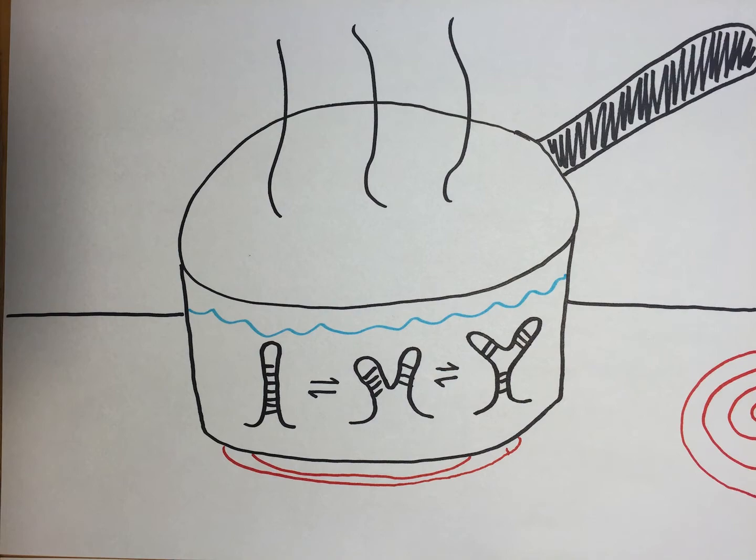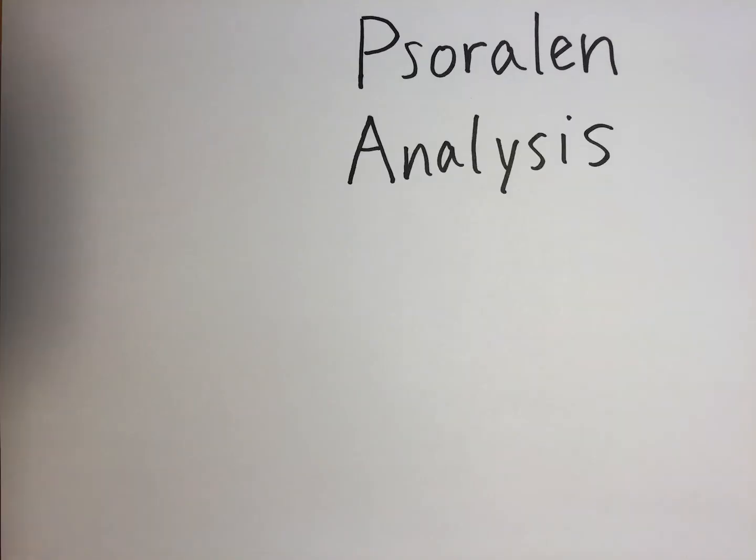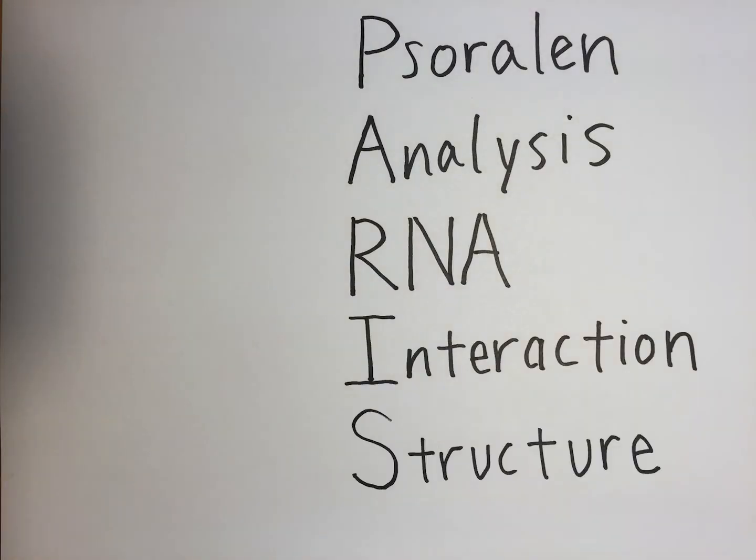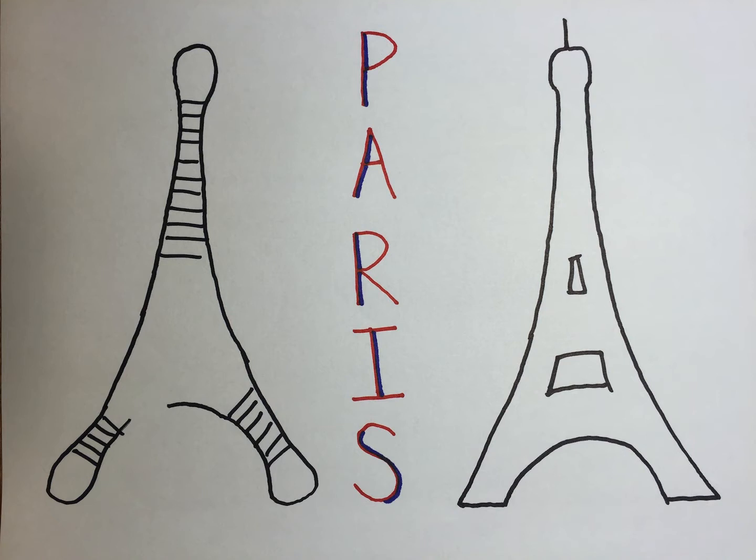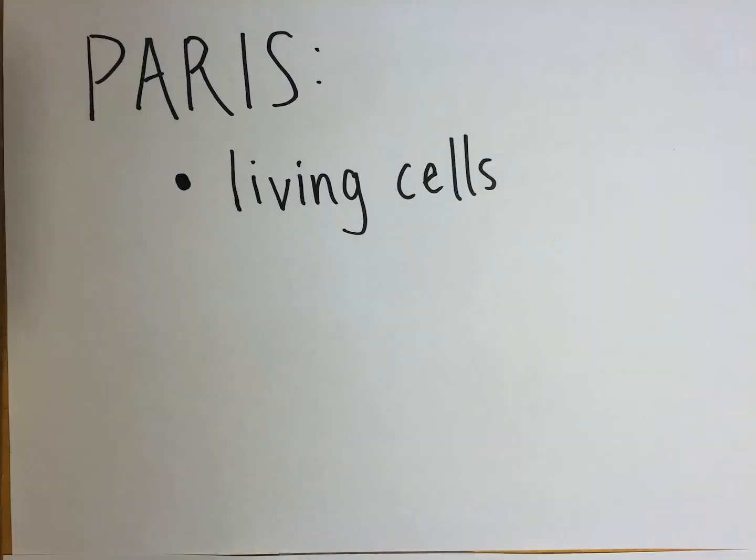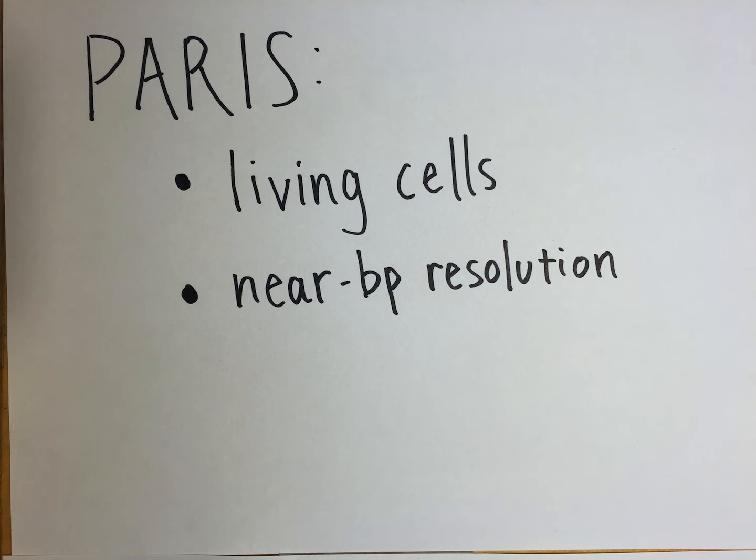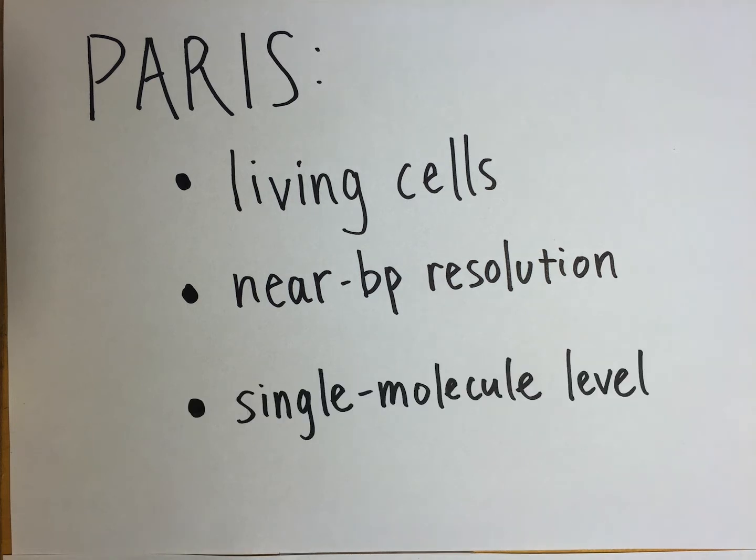To solve these problems, we created a method called SORRELIN analysis of RNA interactions and structure, PARIS for short. With PARIS, we can directly look at RNA double helices in living cells, know how nearly every nucleotide pairs, and see structures in individual molecules.